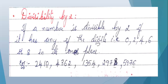We will go to the examples. The first number is 2410. We look at the ones digit — it is 0. So 2410 is divisible by 2. Next number is 4362. The last digit is 2, so it is divisible by 2 — 2 into 1 is 2. Next number is 1354. In ones place the number is 4. 4 is divisible by 2 — 2 into 2 is 4.